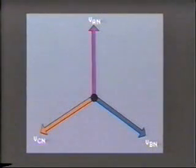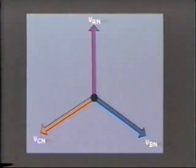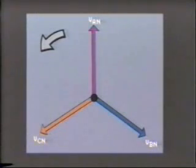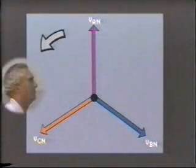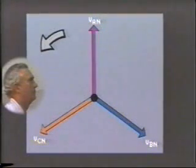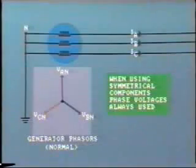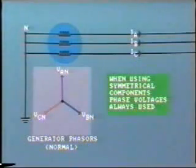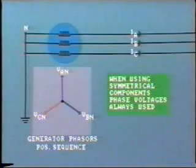Let's look at this a little closer. To begin with, we already know that a generator produces three equal voltages, which are equidistantly spaced 120 degrees apart. The phasor rotation is conventionally counterclockwise and the normal phase sequence is A, B, C. This means that for any fixed point in space, we would see voltage A, then B, then C, then A, and so on in that sequence. When studying symmetrical components, phase voltages are always used — that is, line to neutral or line to ground. We indicate the positive sequence voltages on our diagram by using the subscript 1.